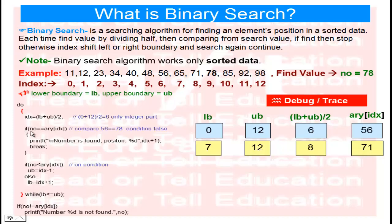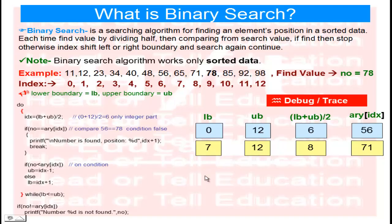Next check: is 78 equal to 71? Condition is false. Is 78 less than 71? Also false. So the lower boundary increases again — because at the seventh position we have 65 and we need to go right. New lower boundary index = IDX + 1 = 8 + 1 = 9.